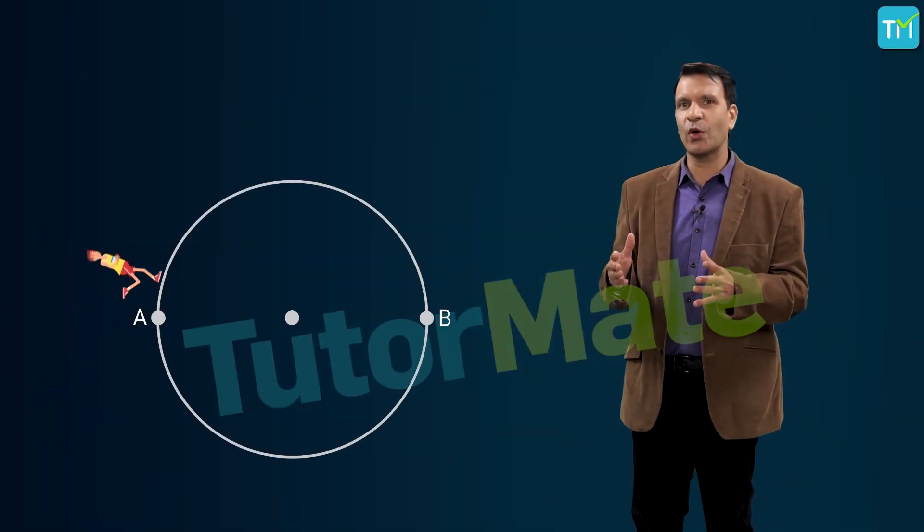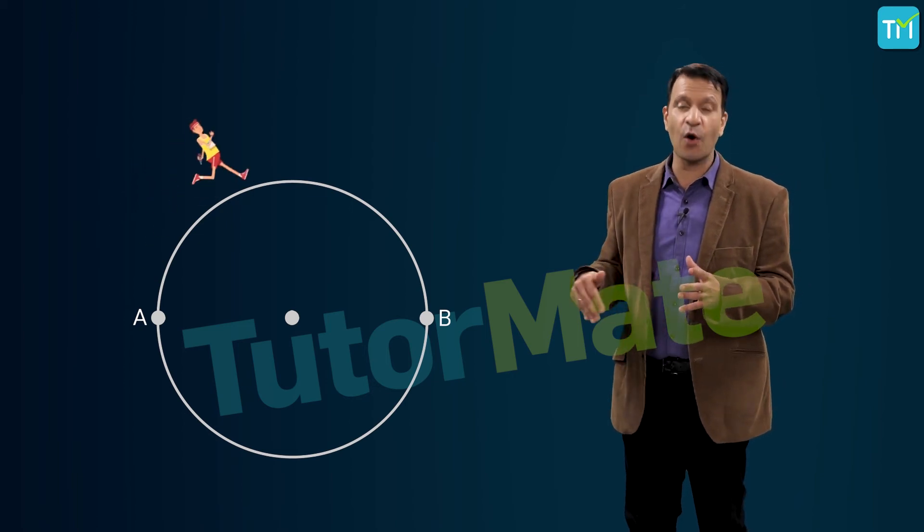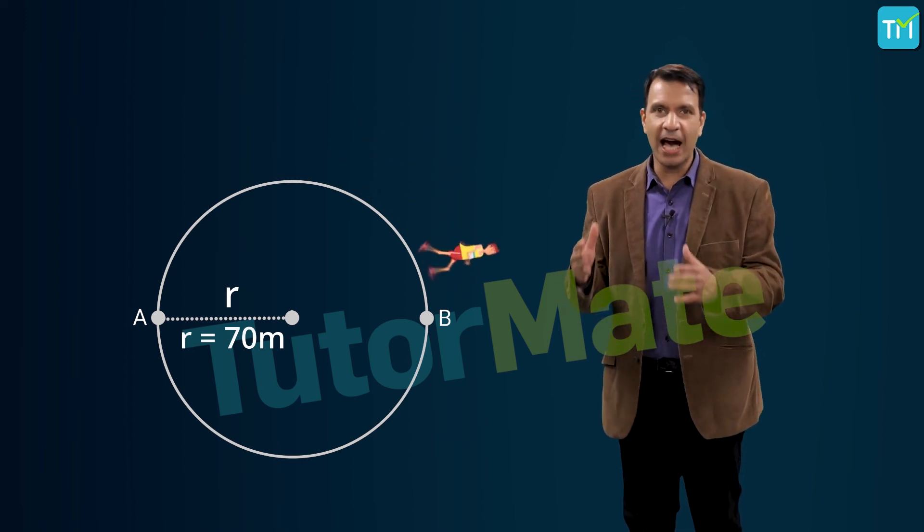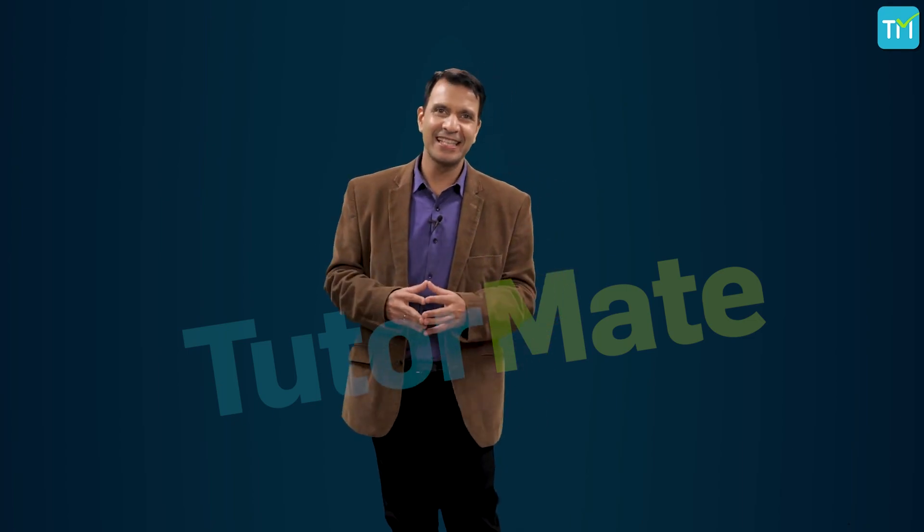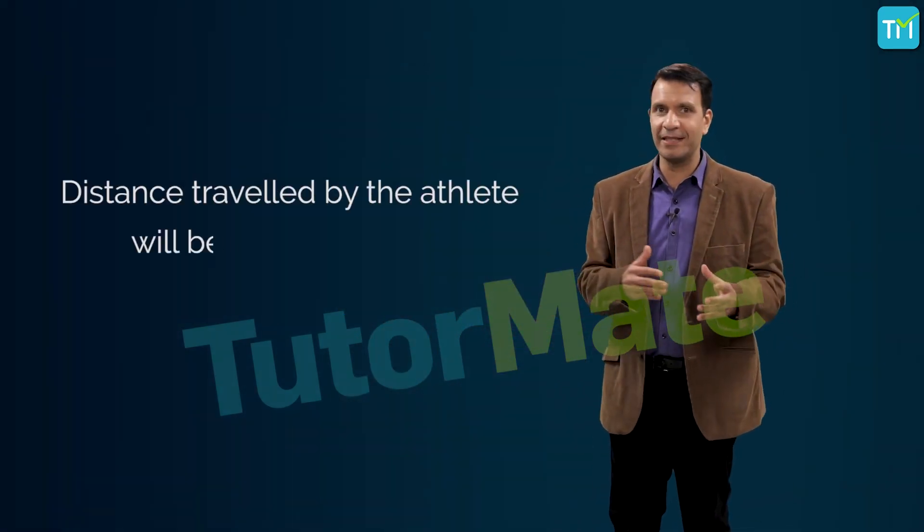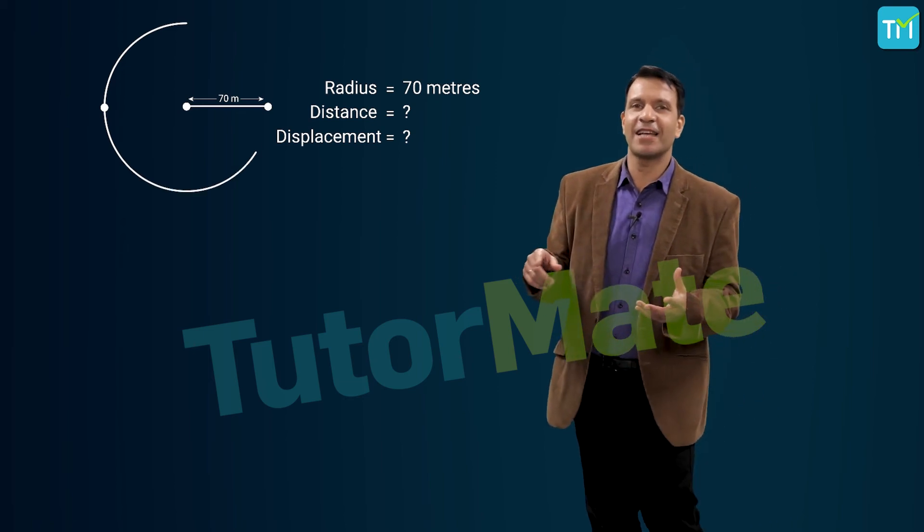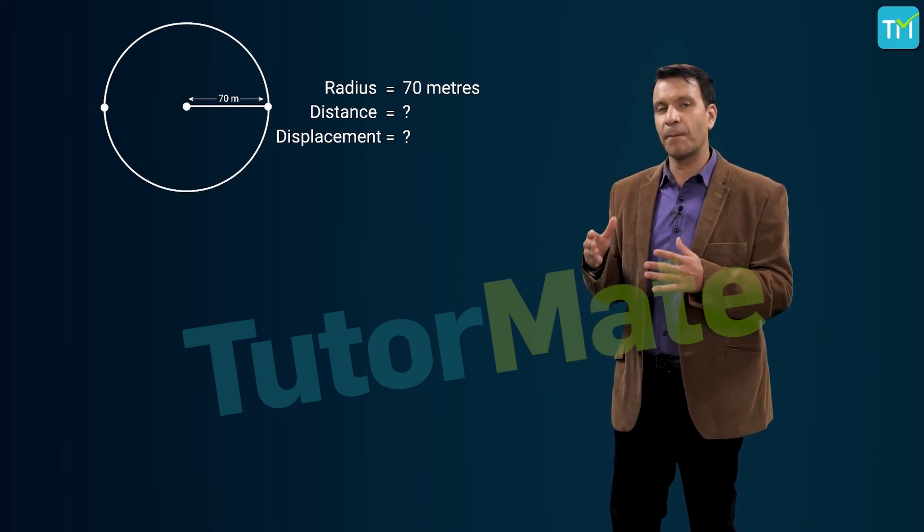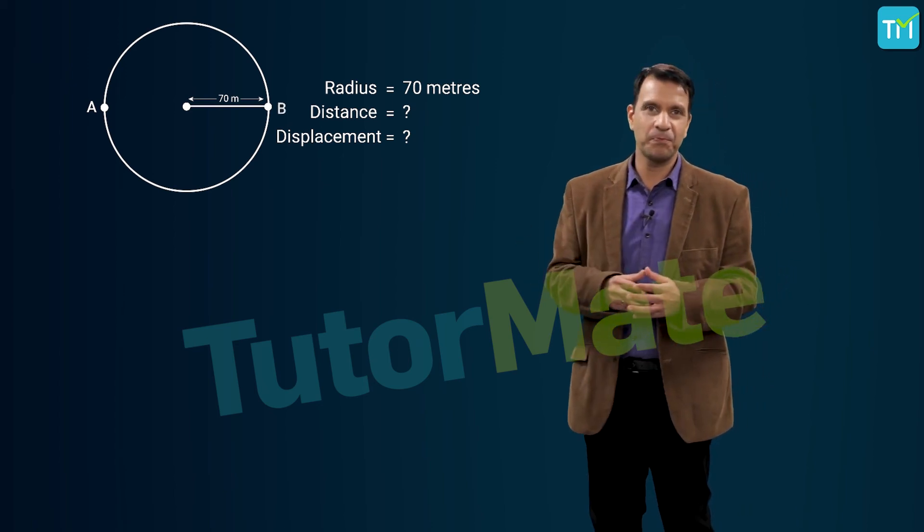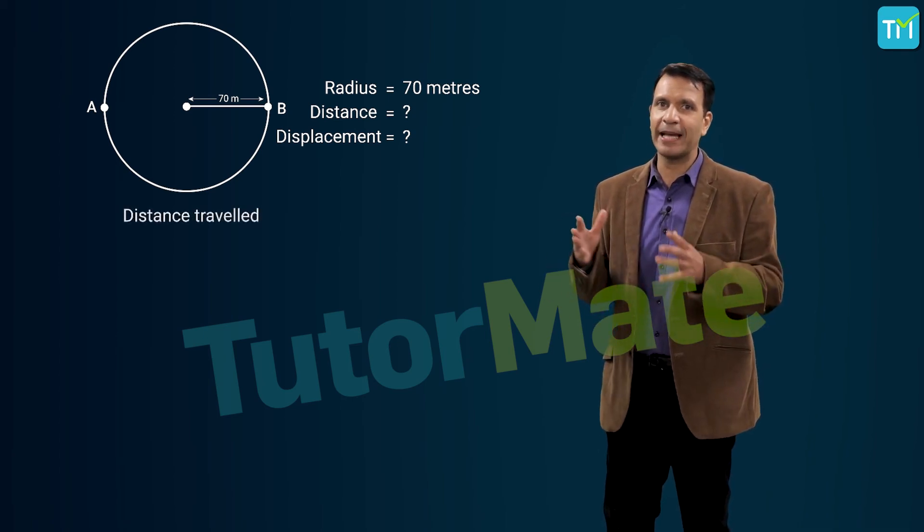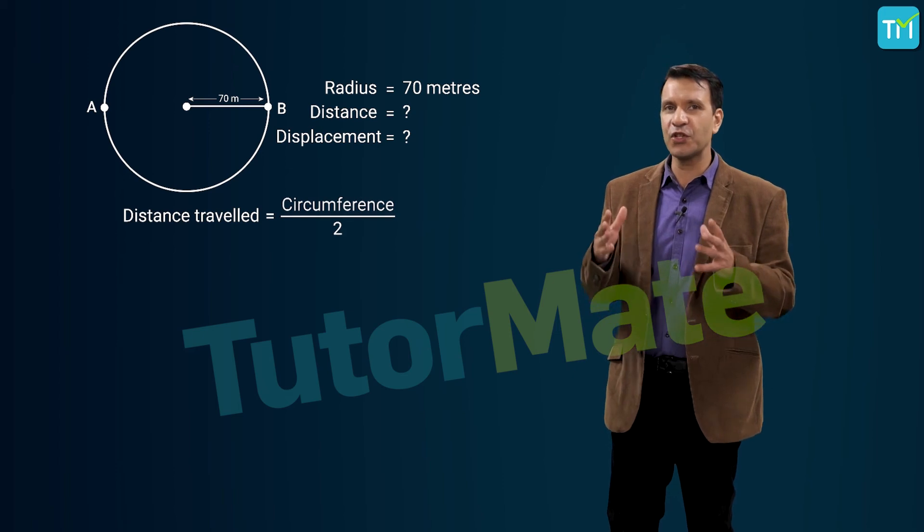Consider an athlete who is jogging around a circular path that has a radius of 70 meters, but he doesn't cover the entire path and stops halfway. Now, using this information, we have to find the distance traveled by the athlete and his displacement. Now we know that the distance traveled by the athlete will be nothing but the actual length of the path traveled by him. Let's draw the circular path as shown and say the athlete traveled from point A to point B. We know that he has only jogged along half the circular path. So the distance covered by him will be half the circumference of the circular path.